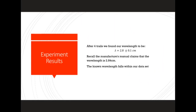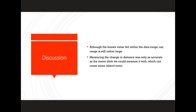After running four trials of this experiment, we found that our wavelength is equal to 2.8 plus or minus 0.1 centimeters. If you recall from a couple of slides ago, the known wavelength given to us of this electromagnetic radiation was 2.84 centimeters. Thus, the known wavelength falls within our data set. Although this value fell within our data range found experimentally, our range is rather large.